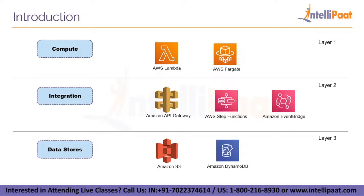For example, AWS provides the following services for a serverless infrastructure. For the compute layer, we have AWS Lambda and AWS Fargate for microservices. For the integration layer, we have Amazon API Gateway, Step Functions, EventBridge, and many other services. For data stores, we have Amazon S3 — Simple Storage Service — and Amazon DynamoDB, plus many more according to the needs of the app.